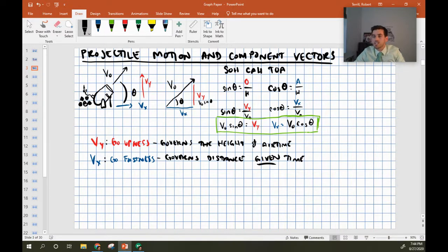Our go fastness is governing the distance that will travel given time. So V_X can't get us over unless it has time. If we're going 50 meters per second but we only have one second, we're going to travel 50 meters. If we are going 50 meters per second but we have two seconds, well now we get to go 100 meters. So go fastness by itself helps get us a little bit further, but we need the time from our go upness in order to cover that distance.